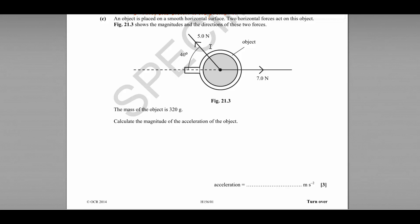The figure here shows the magnitude of these two forces: one of 5 newtons acting 40 degrees to the horizontal to the left, and one of 7 newtons acting horizontally to the right. We know the mass of the object is 320 grams.